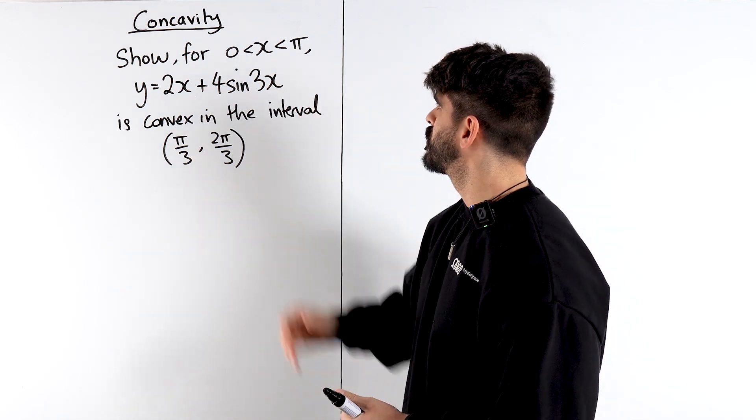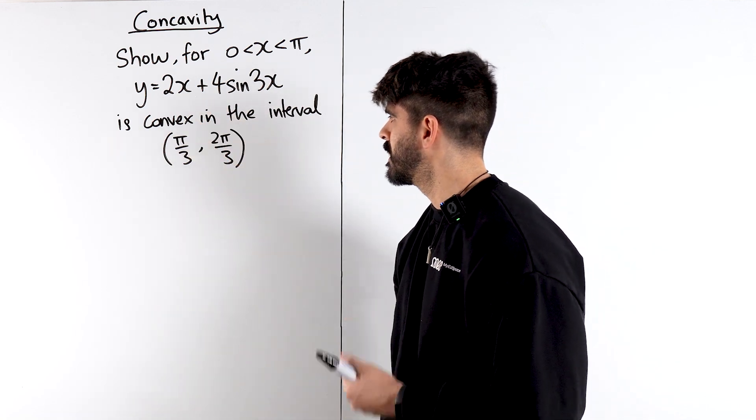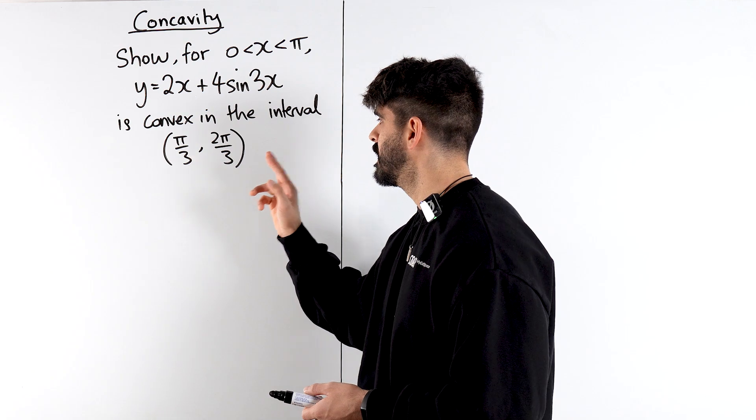So it says, show for 0 < x < π that this function y = 2x + 4sin(3x) is convex in the interval between π/3 and 2π/3.